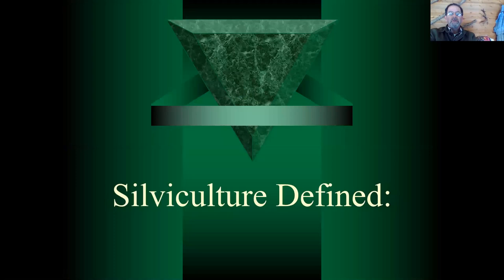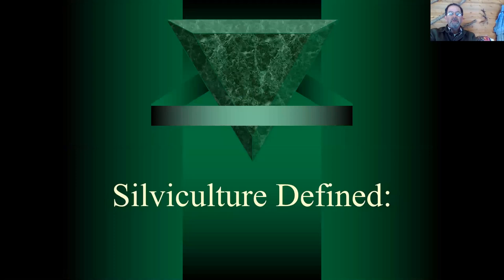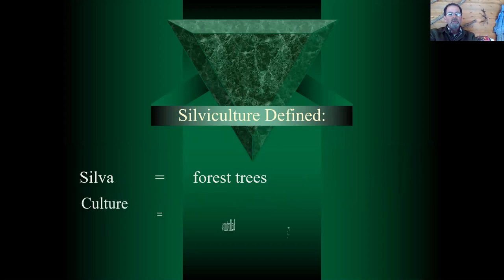Let's define the word silviculture — that's kind of a mouthful. We break that word down and we see the Latin word silva, which means forest trees. We also see the word culture, which means controlling the growth of something. So if we put them together, foresters are controlling the growth of forest trees.